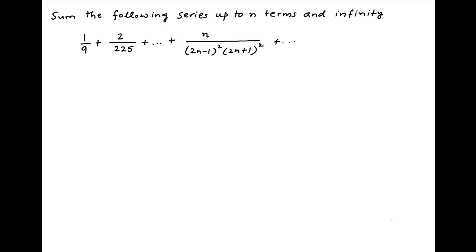The general term, or the kth term, of the given series is equal to k upon (2k minus 1) whole square times (2k plus 1) whole square.